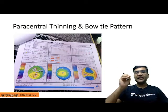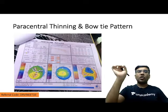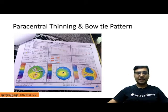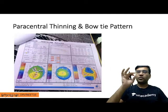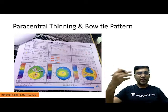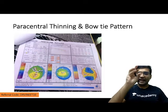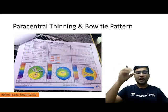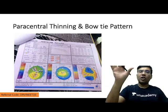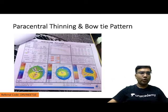We have paracentral thinning and bow tie pattern. Whenever we have keratoconus, the central or paracentral part of the cornea is thinned. If you can see this Pentacam — which is the investigation of choice for keratoconus — in the center you see a yellowish color. The more the colors are towards red, the thinner the cornea. So you have central or paracentral thinning in keratoconus.